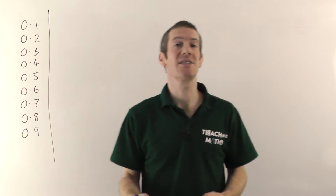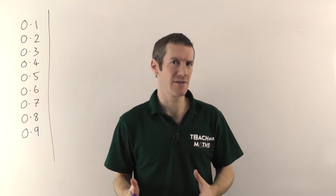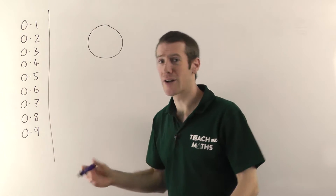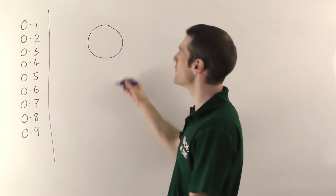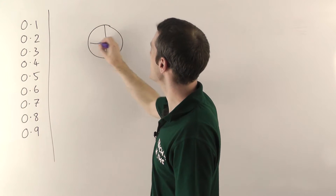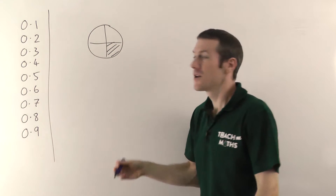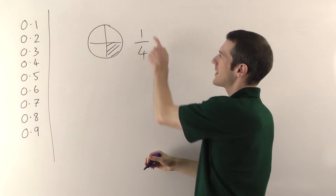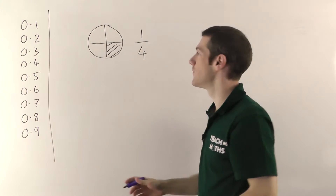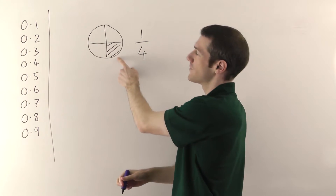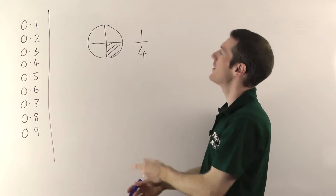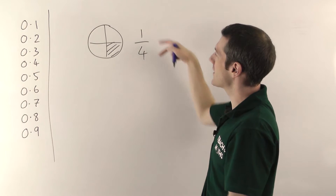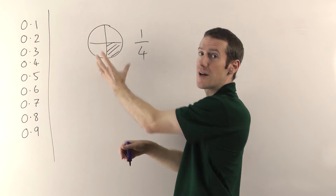Fractions are much easier to understand generally — they're far more intuitive than decimals. Imagine you have a pizza, or a cake, or whatever your favourite circular food is. If I split it into four and eat one slice, you can see I've eaten one quarter of the pizza. Understanding how these numbers connect to the real-life object is fairly straightforward: the number on top is the number of slices you've got, and the number on the bottom is how many slices there are altogether.